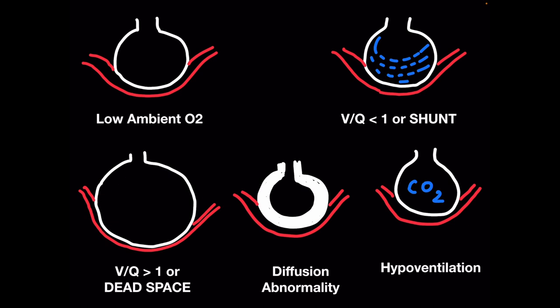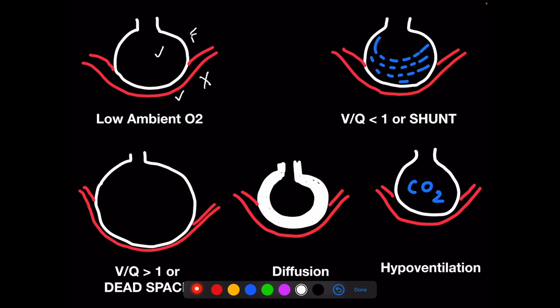The first cause is low ambient oxygen — on Mount Everest, in a plane with pressure loss, or from a blast that consumes oxygen. Low ambient oxygen never really happens in the hospital. There is nothing wrong with the alveoli or capillaries. FiO2 is down, so the A-a gradient is normal and you have low oxygen simply because you're breathing air with low oxygen content.